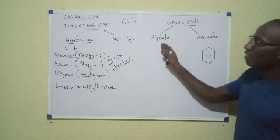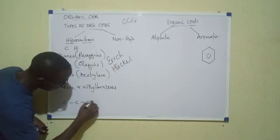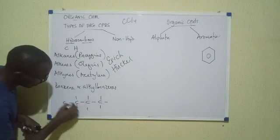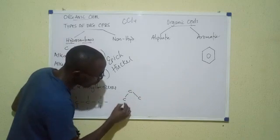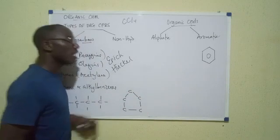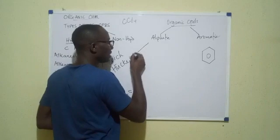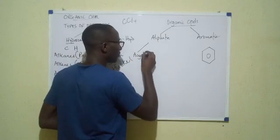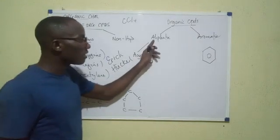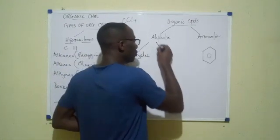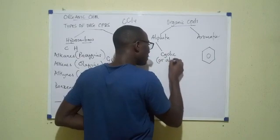There are some of them that occur in the form of open chains like this. You see that they have open chains and then there are some that you see in this form, in the form of closed rings. When aliphatic compounds occur in the form of open chains like this, we will say that they are acyclic. Those are the ones with open chains. But aliphatic compounds with closed rings like this will be described as cyclic or alicyclic.